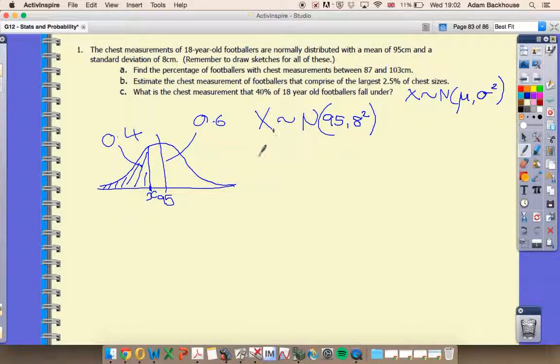So what do we know? We know that the probability that our random variable, the footballer that we choose, has a chest measurement less than something, our little x down here, that probability has got to be 40%. So this is what we know, and we're trying to find out x. That's what I want to find. So I'm going to go to my calculator.